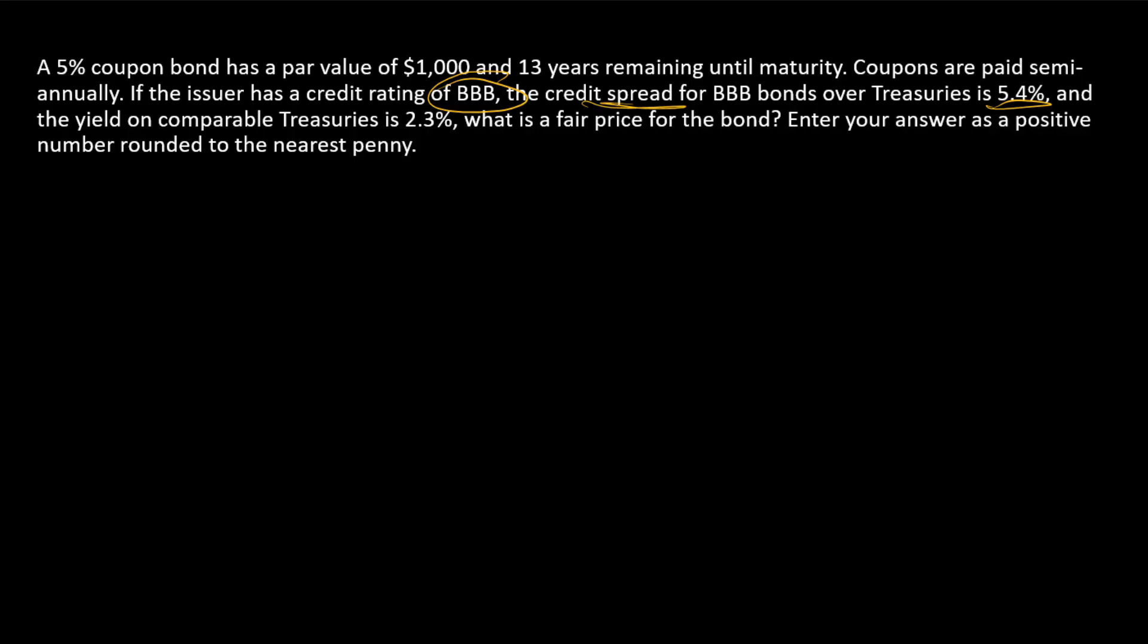And so here then, the yield to maturity that we are after in this problem is the treasury yield, which is 0.023, plus the credit spread, which is 0.054. And so that equals 0.077.